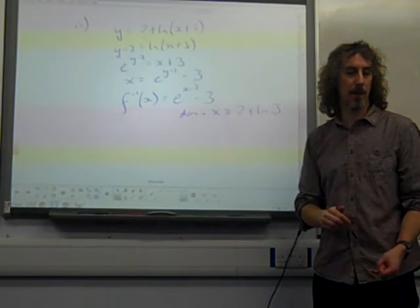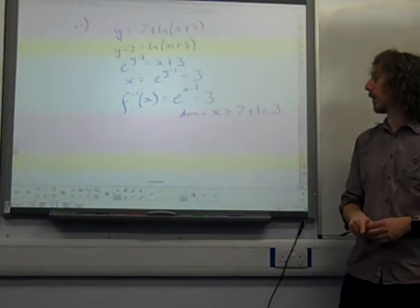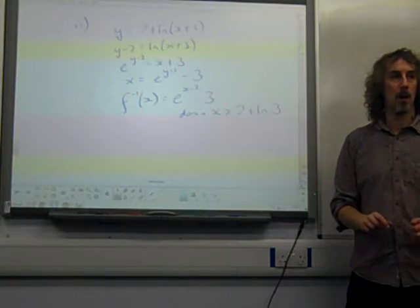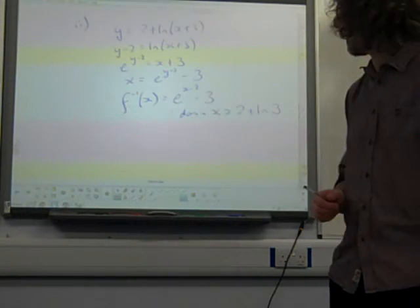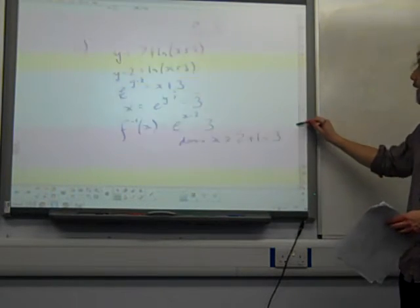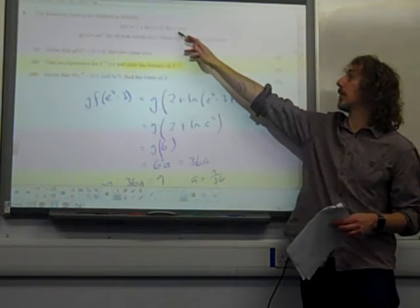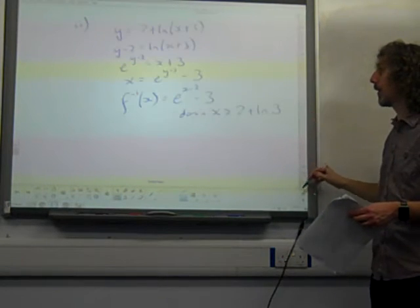There was quite a sneaky mark shuffled in at the end of that. Remember, a domain has to be in terms of x, a range has to be in terms of y or f of x. I reckon that's quite a tough mark just sneaked in at the end of it. And it's an or equal to, because this one said x could be equal to 0, and that would give us our 2 plus ln3.